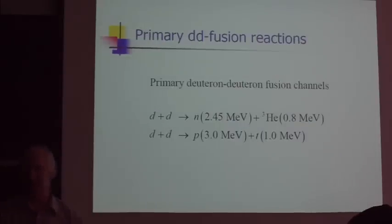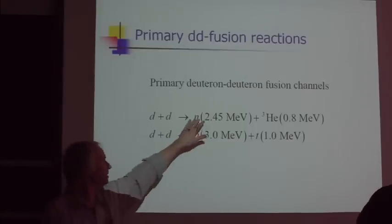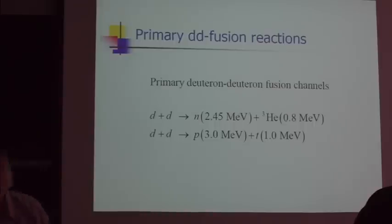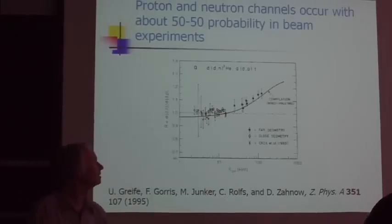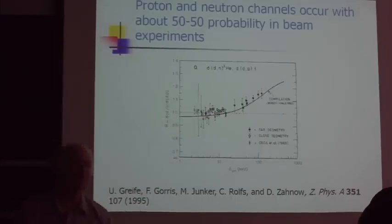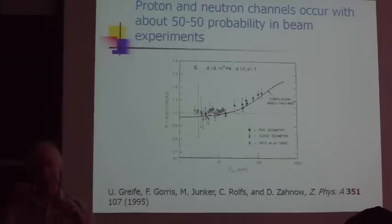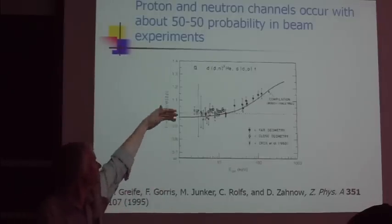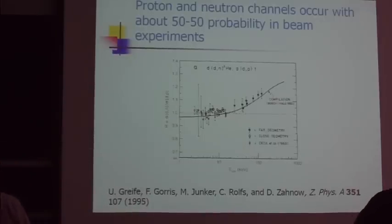The primary DD fusion reactions: deuterons come together as two nucleons each, so you've got 3 plus 1 channels, roughly 50-50. You get a neutron off about half the time. Here's some experimental results. There's an Oppenheimer-Phillips effect - deuterons oriented with protons away can get a little closer. If oriented the other way, the Coulomb potential kicks in first. So you'd expect the reaction with the neutron to go off more than the proton channel.